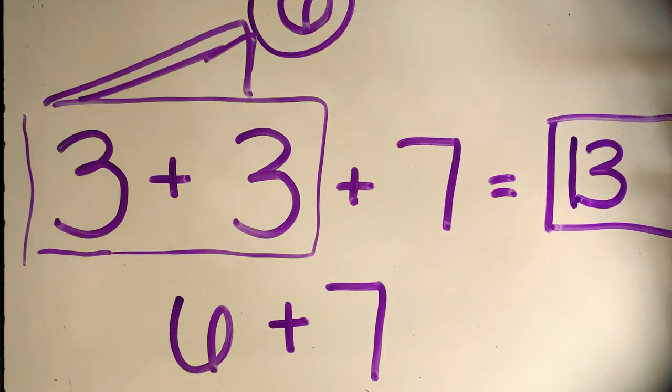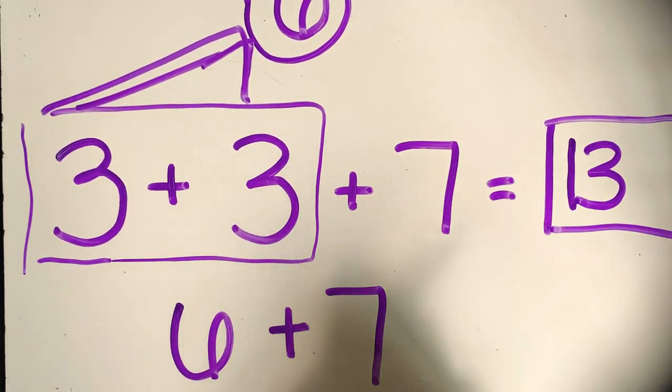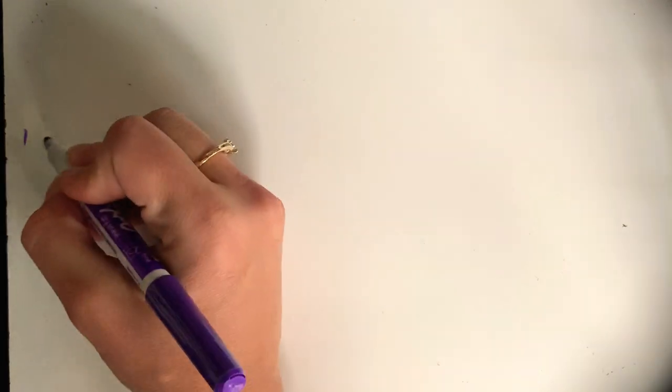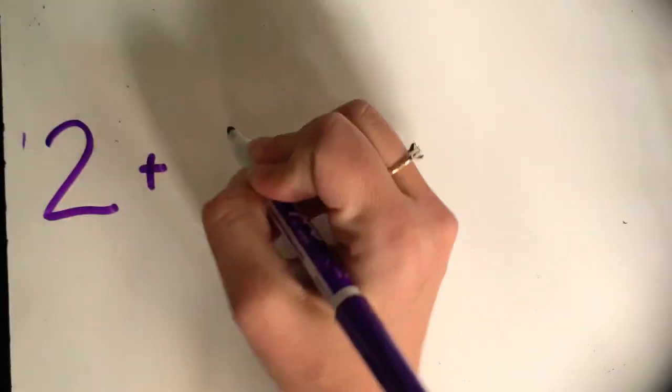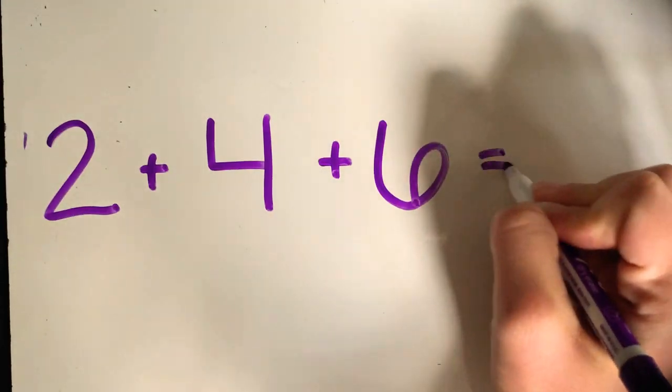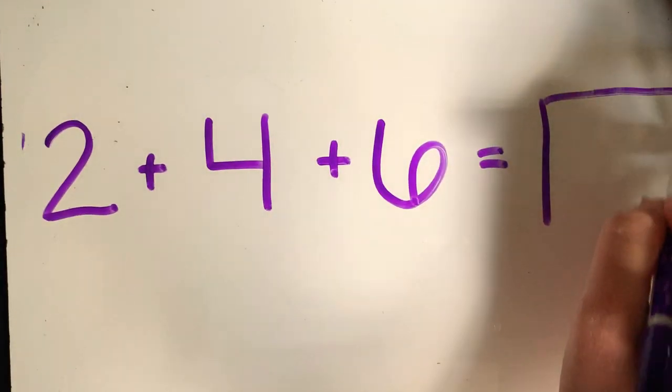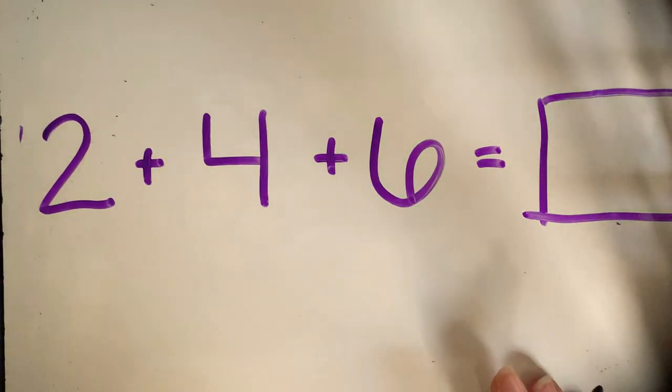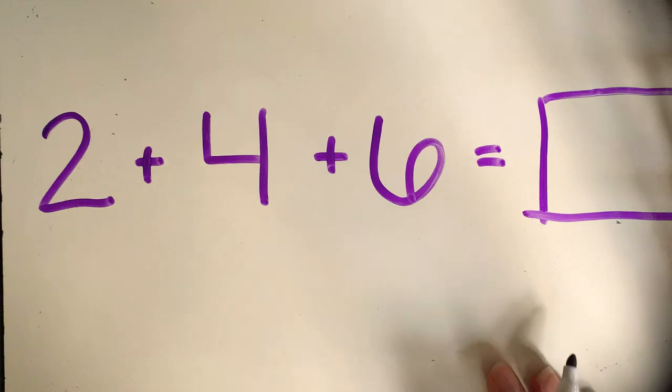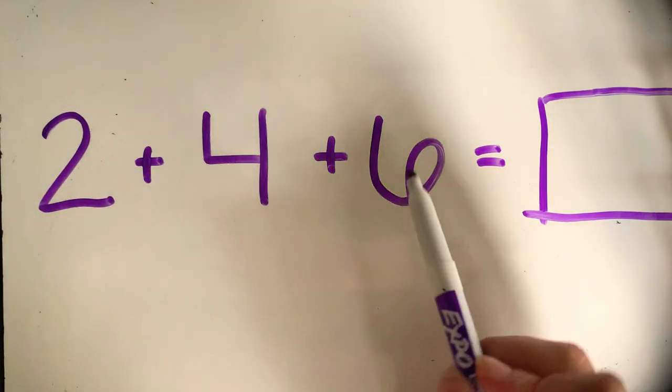So that's problem number one. Let's try problem number two. We'll see if there's another doubles fact. Two plus four plus six equals blank. In this problem, do you see a doubles fact? Nope, I don't. There's a two, a four, and a six.